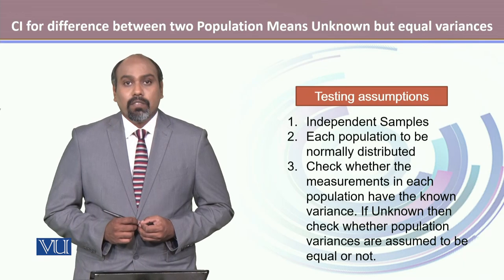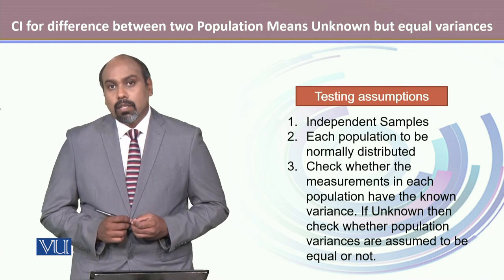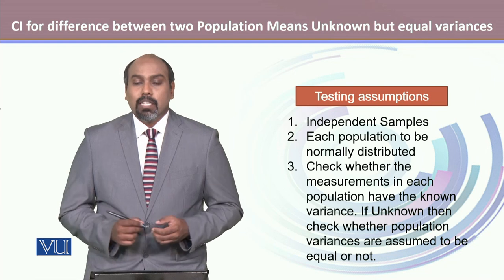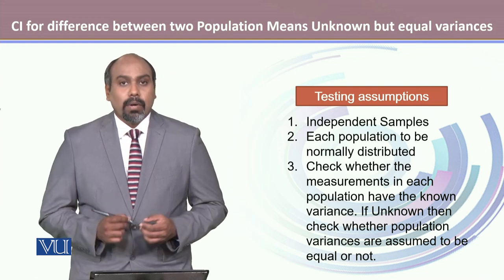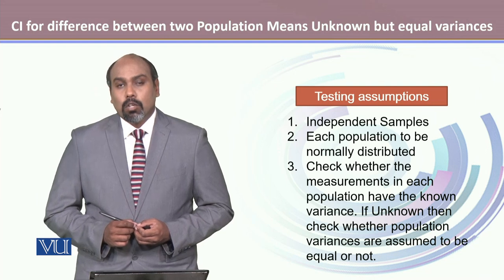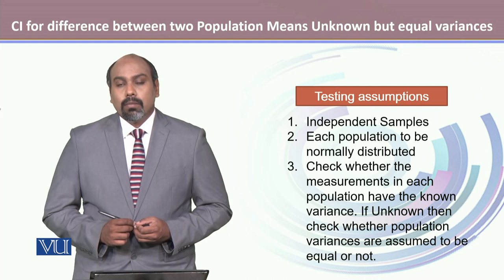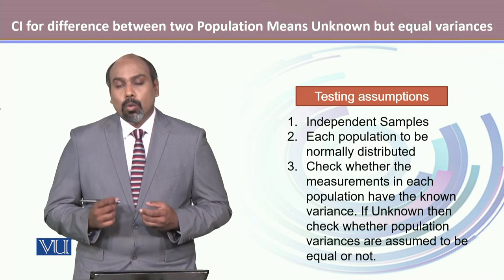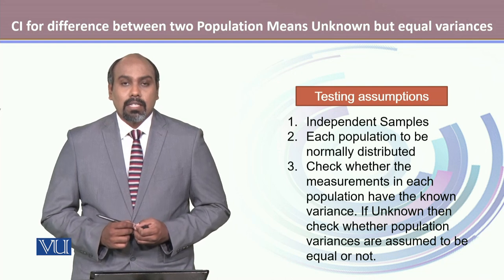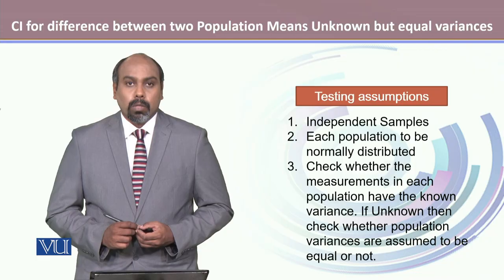We need to check three assumptions. The first assumption is whether the two samples are independent. The second assumption is whether both samples come from a population that follows the normal probability distribution. Thirdly, whether the variances are known or unknown — and in this specific case, population variances are unknown and assumed to be equal.